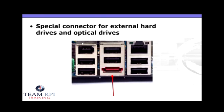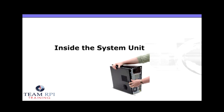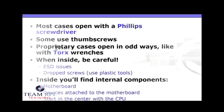And then there's eSATA. eSATA connections are going to connect an external hard drive or possibly an optical drive like CD and DVD. Now that we understand the connections and the devices, let's take a look inside the PC. You'll be able to open most cases with a standard Phillips screwdriver. Some cases you won't need a tool at all — you can just unscrew with thumb screws. Others might have a proprietary case that opens in odd ways, usually requiring a torque wrench. Once inside the computer, electrostatic discharge can be the death knell for a computer. If you drop small screws inside the case, never retrieve them with metal tools — always use plastic ones, like plastic tweezers.